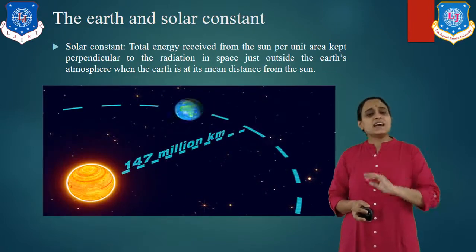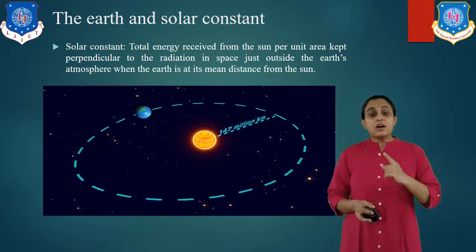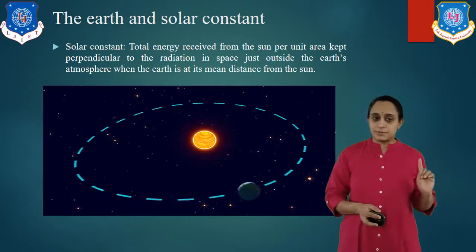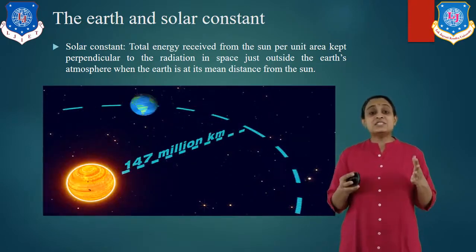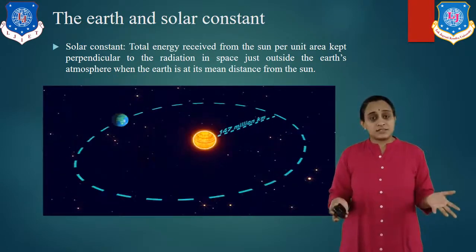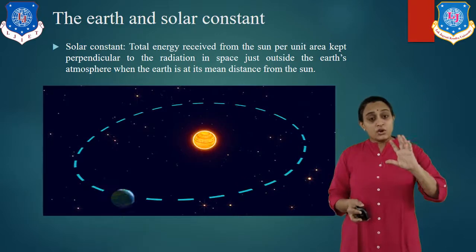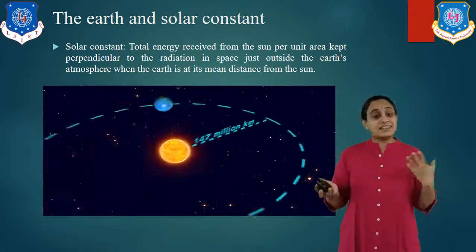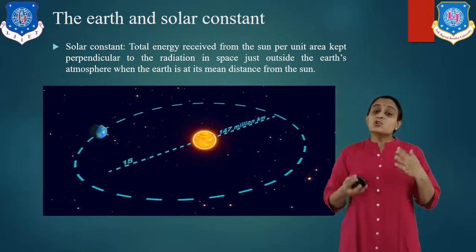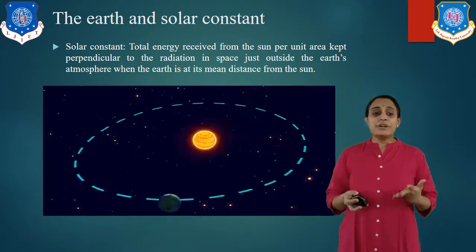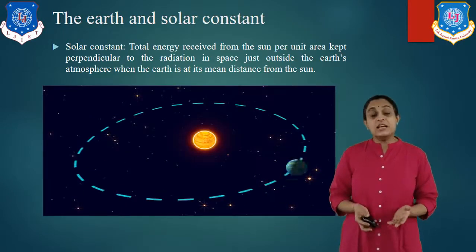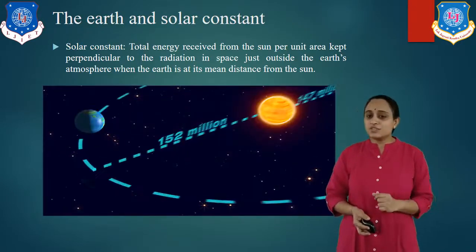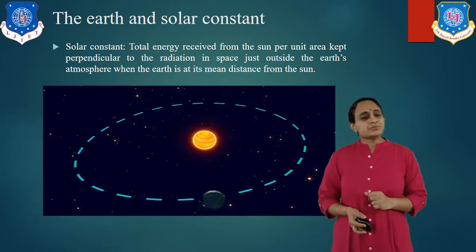As you see this diagram, Earth moves in a particular orbital space. By this, there is a change of season. And because Earth rotates on its axis, there are days and nights. So by studying the proper movement of the Earth and the sun, we can get the understanding of the energy.